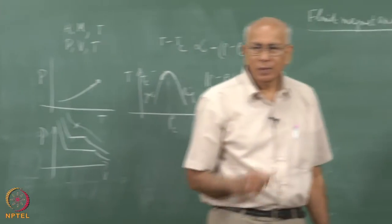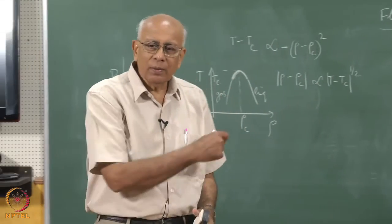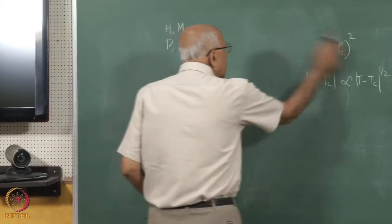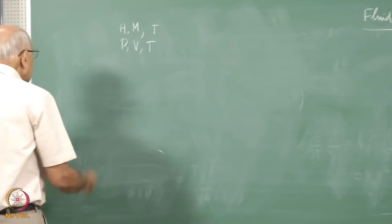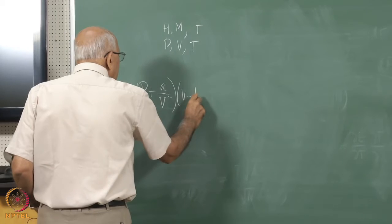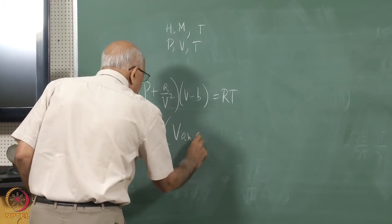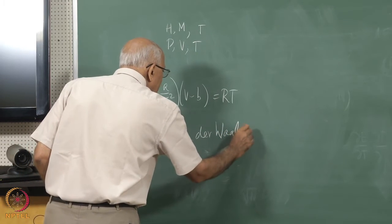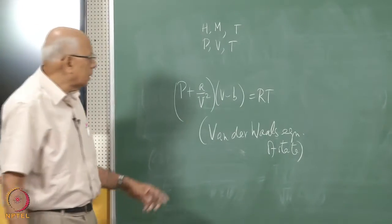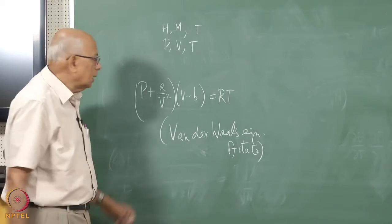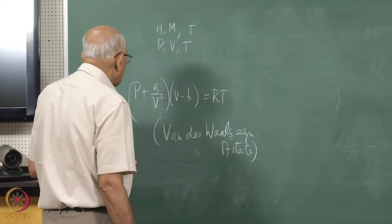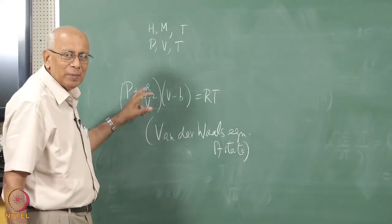The model for the liquid-gas system is the Van der Waals equation of state: (P + A/v²)(v − B) = RT, where v is the volume per molecule. B is the excluded volume due to the finite size of each molecule, and A measures the force of attraction between molecules.